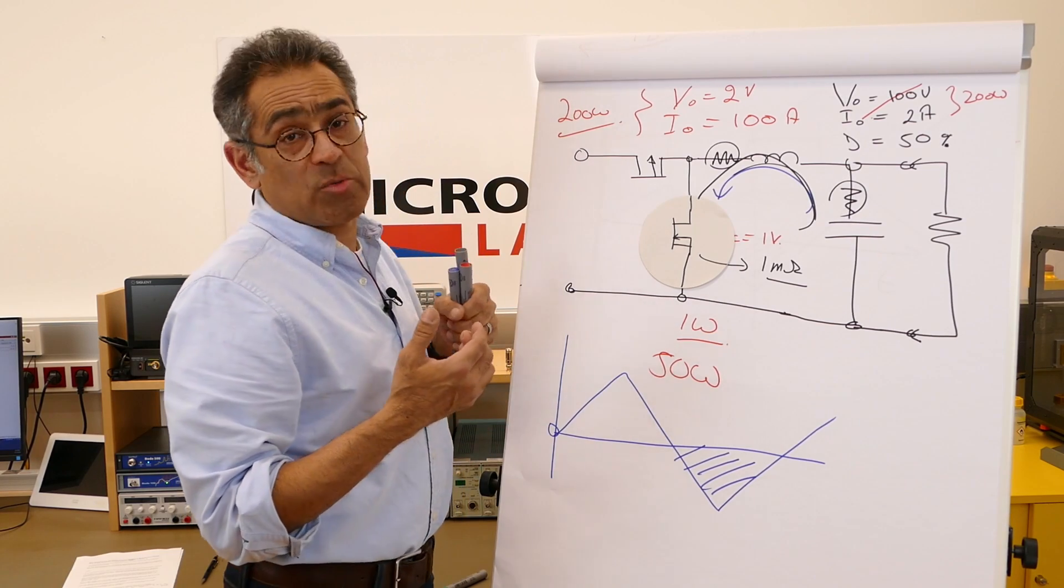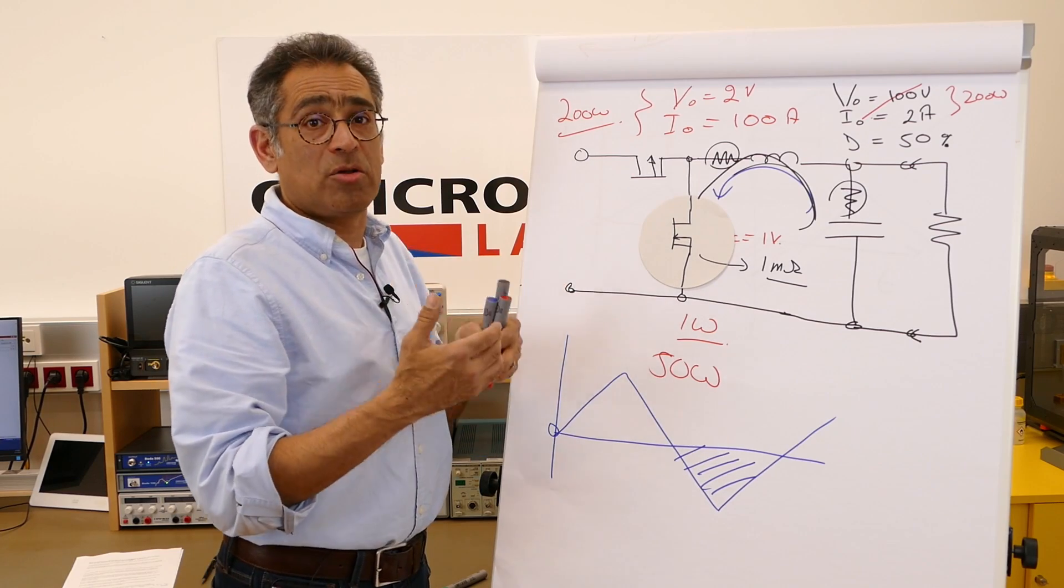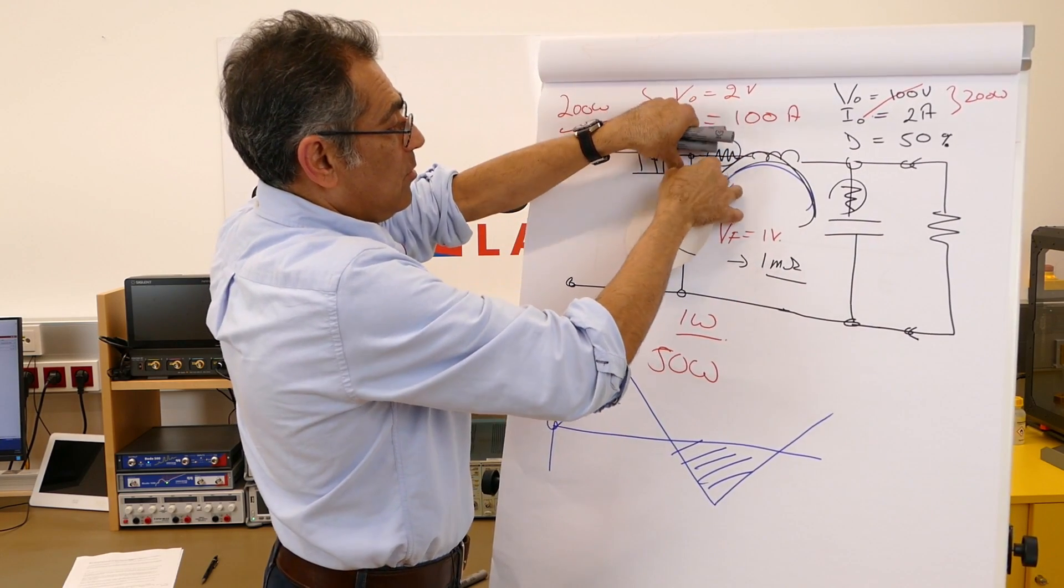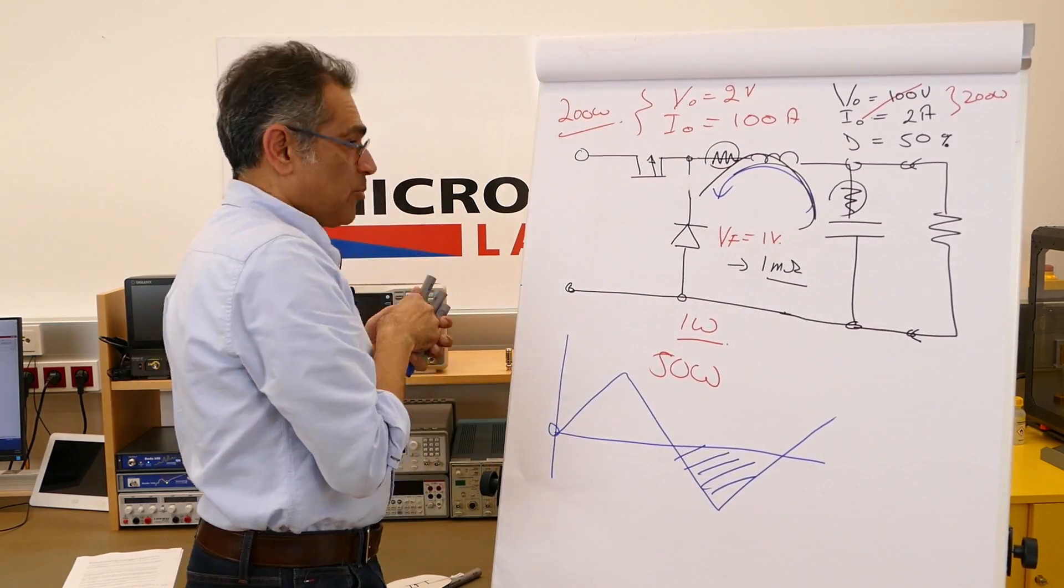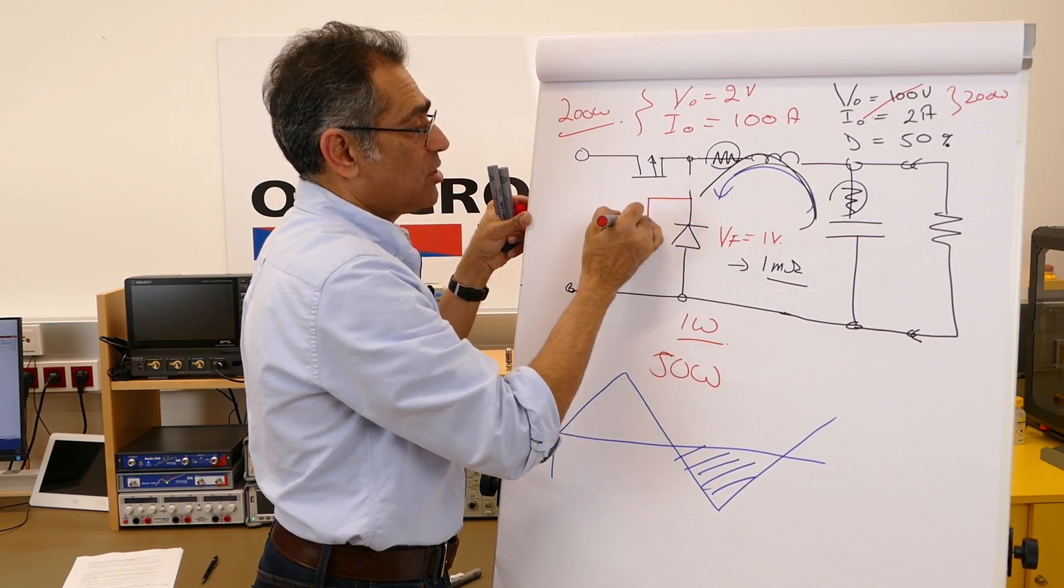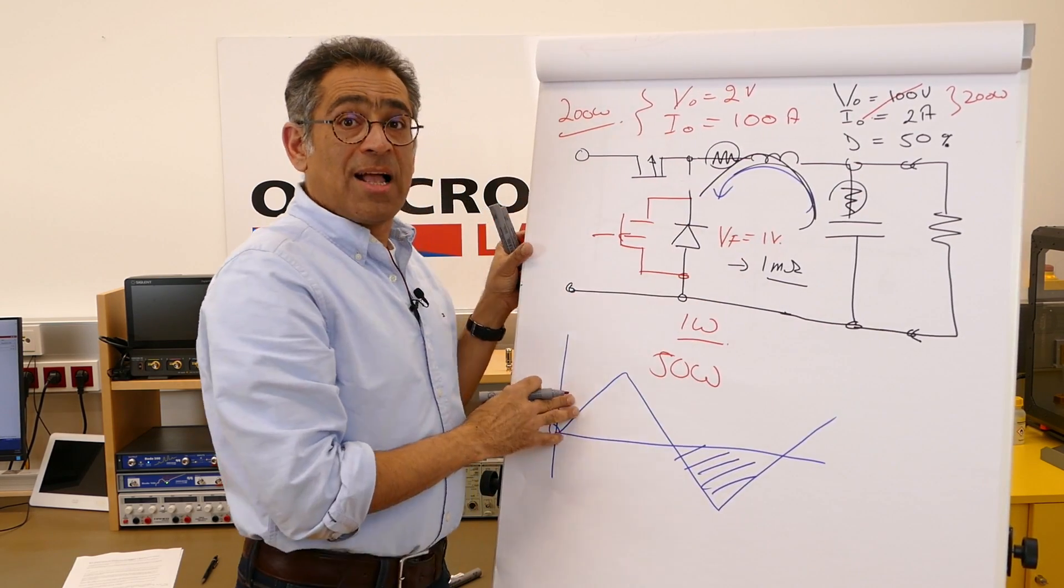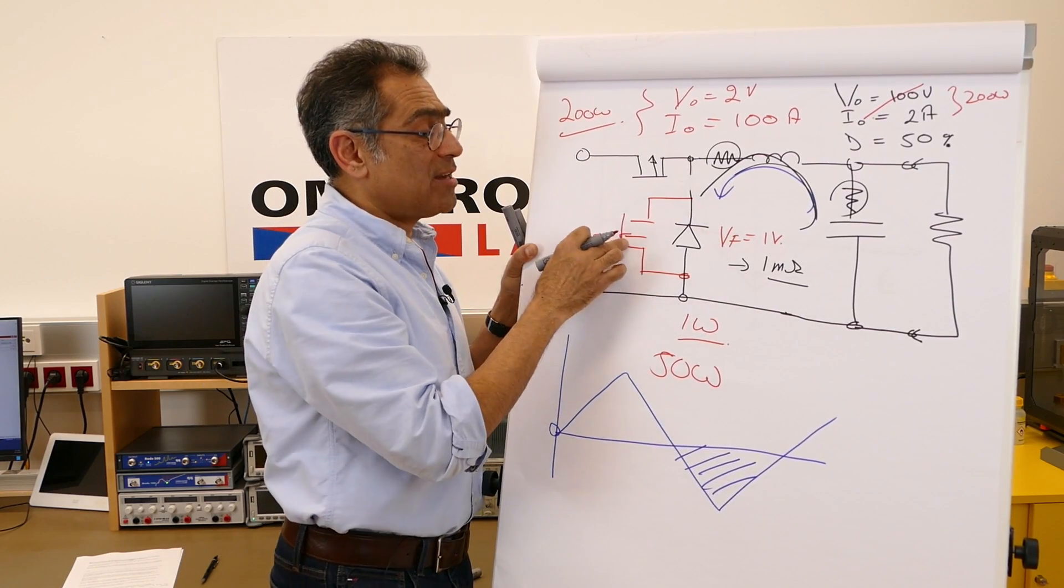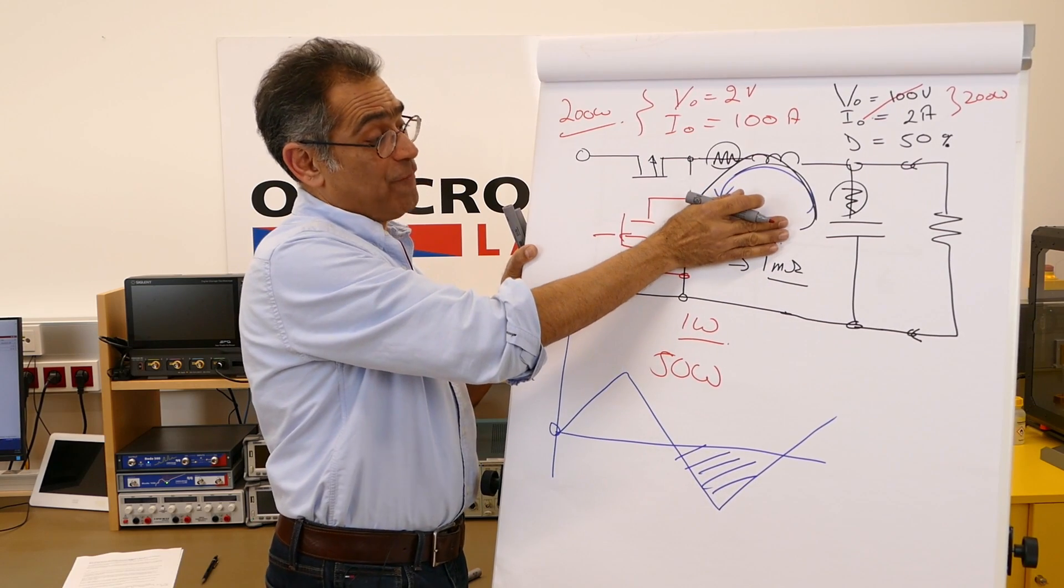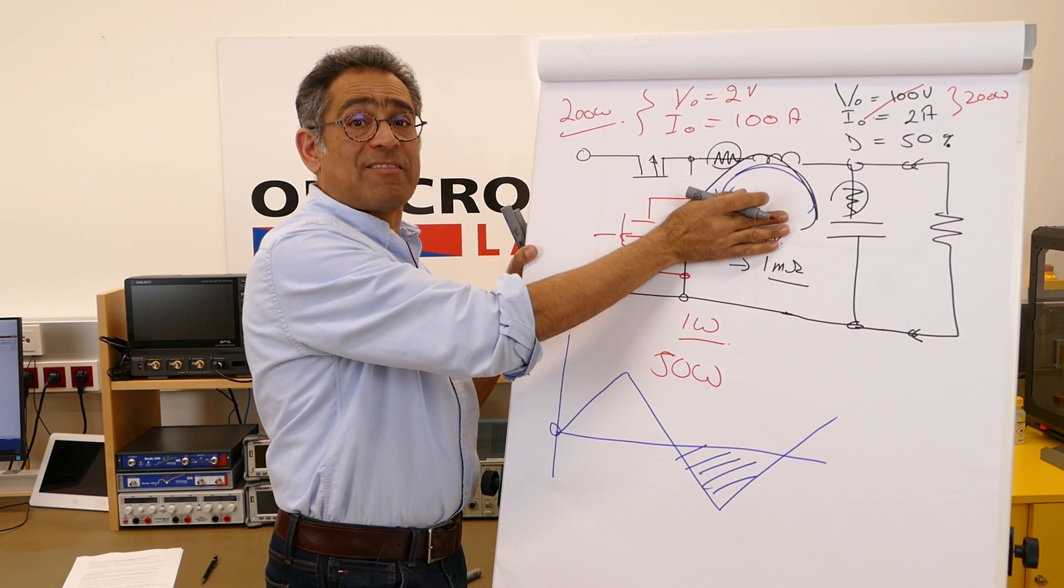Therefore, engineers went on and invented a third category, which is called synchronous buck with diode emulation. And what they did was, in addition to this MOSFET, they put a parallel diode. So a synchronous buck with diode emulation has got a MOSFET and the diode. And the controller decides whether this is being switched or not. During high currents, whereby you want the efficiency of a synchronous switcher, this is being switched and therefore the diode is out of action.